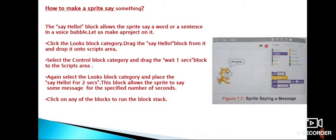How to make a Sprite say something? The Say Hello block allows the Sprite say a word or a sentence in a bubble. Let us make project on it. Click the Looks block category, drag the Say Hello block from it, drop it onto Scripts area. Select the Control block category and drag the Wait 1 Seconds block to the Scripts area. Again, select the Looks block category and place the Say Hello for 2 seconds. This block allows the Sprite to say some message for the specified number of seconds. Click on any of the blocks to run the block state. Again, select the Looks block category and place the Say Hello for 2 seconds block beneath the Wait 1 Seconds block. Now, type the message How are you? inside the text space of the block. Drag out the Say Hello block again and drop it at the end of the script. Change the Text of the block to I am good. Click on any of the blocks to run the block state.